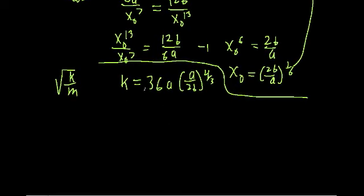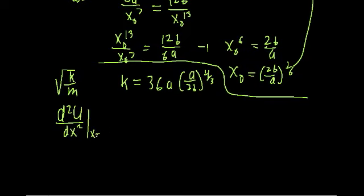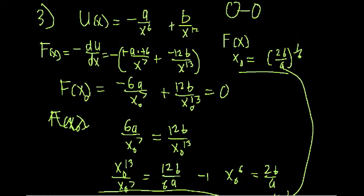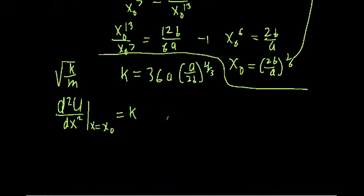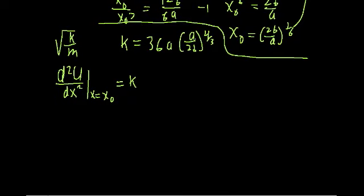In order to find K, we have to recall the mathematical definition of simple harmonic motion, where for the general case we had the second derivative of U with respect to x evaluated at its equilibrium position x = x₀. For the mass-and-spring system, we found we set this equal to K. So if we liken this system to a mass-and-spring system, we need to take the second derivative of our potential and evaluate it at x₀.